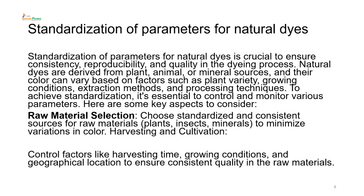To achieve standardization, it is essential to control and monitor various parameters. Selection of proper raw material: standardization cannot take place unless we have chosen the right plant material and the right plant part for a consistent source — whether it is plants, insects, or minerals — to minimize variation in color. Control factors like harvesting time, growing condition, and geographical location to ensure consistent quality in raw materials.